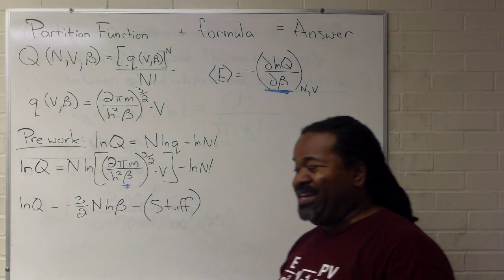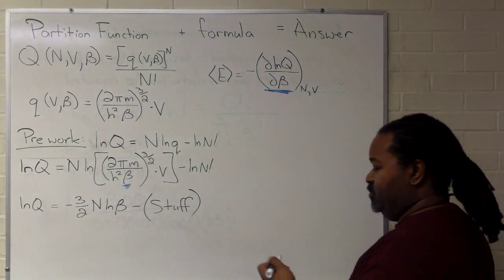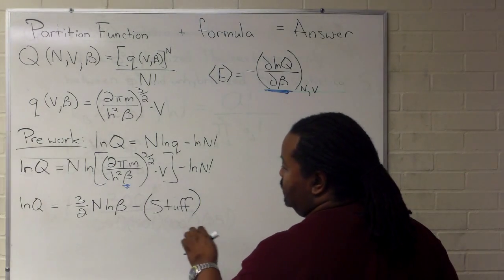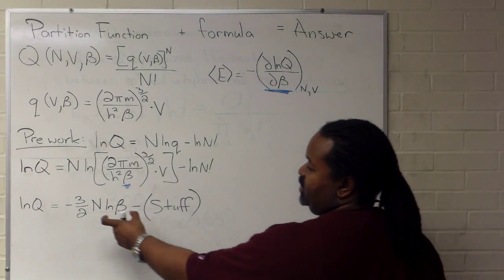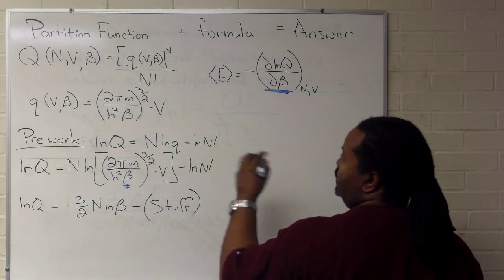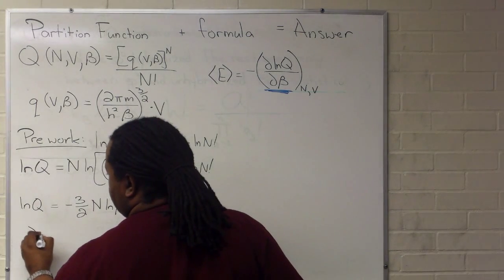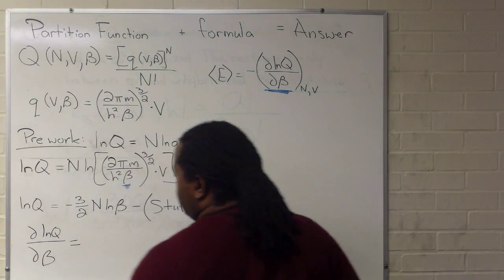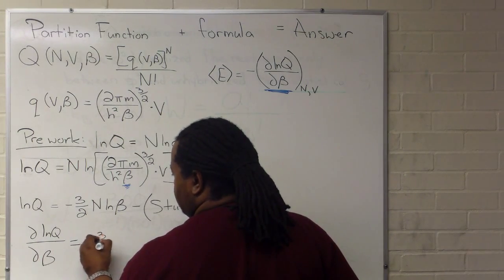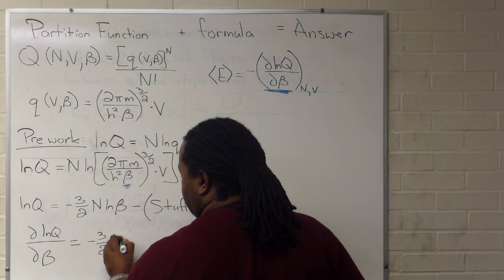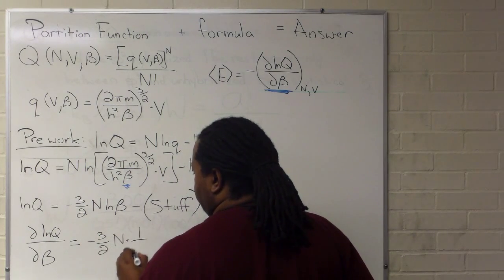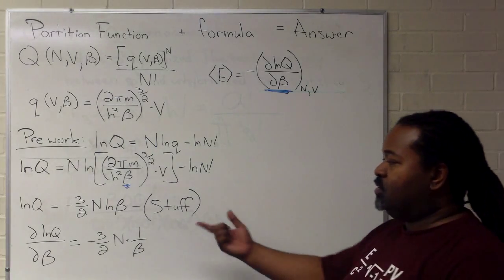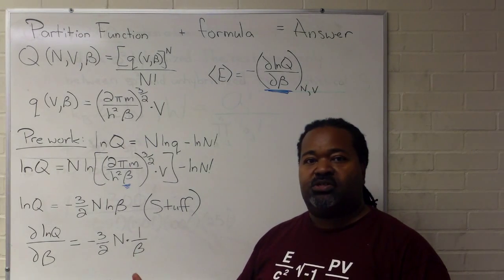So once we have this, we can actually just take the derivative. And we take the derivative, all of this goes away, and we're going to have that partial ln Q partial beta will be equal to minus 3 halves n times 1 over beta. And so now that we have partial ln Q partial beta, we can complete using this formula by putting a minus sign in front.